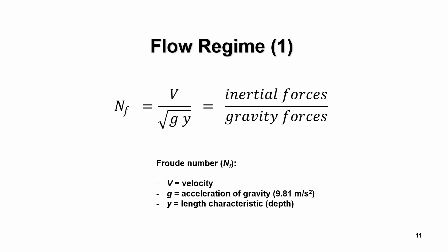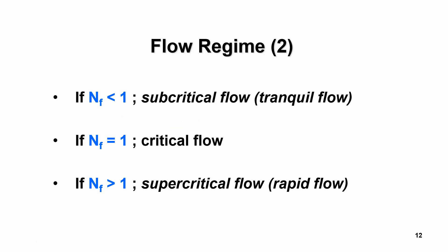The flow regime is described by the Froude number, given by the velocity divided by the square root of gravity multiplied by the depth of flow. It calculates the ratio of inertial forces over gravity forces, and is extremely important in hydraulics calculations. If the Froude number is less than one, we call it subcritical or tranquil flow; if equal to one, critical flow; and if greater than one, supercritical or rapid flow.